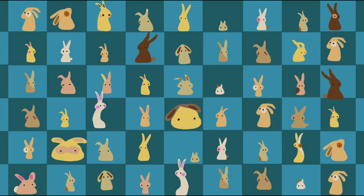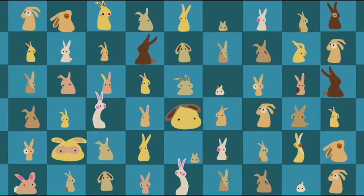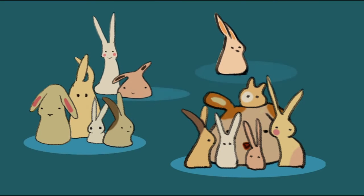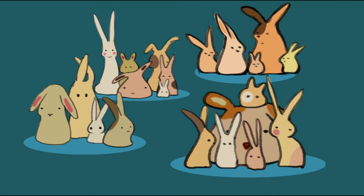Instead of measuring every rabbit in the whole group, he decides to measure rabbits in small groups chosen at random. He knows that each small group won't necessarily be perfectly representative of the whole group, so he measures many small groups and compares the averages of each.